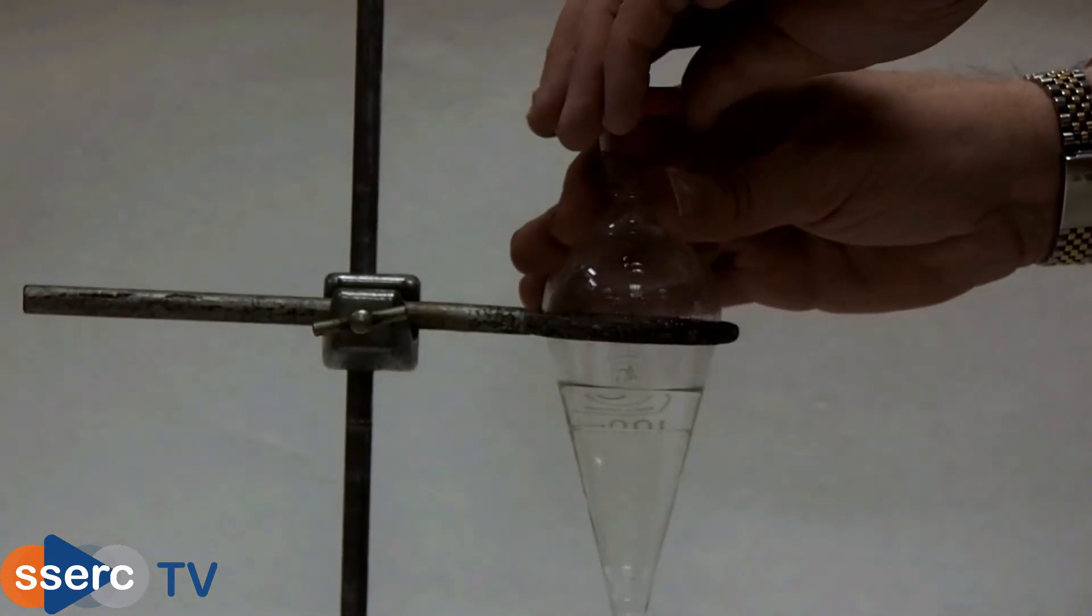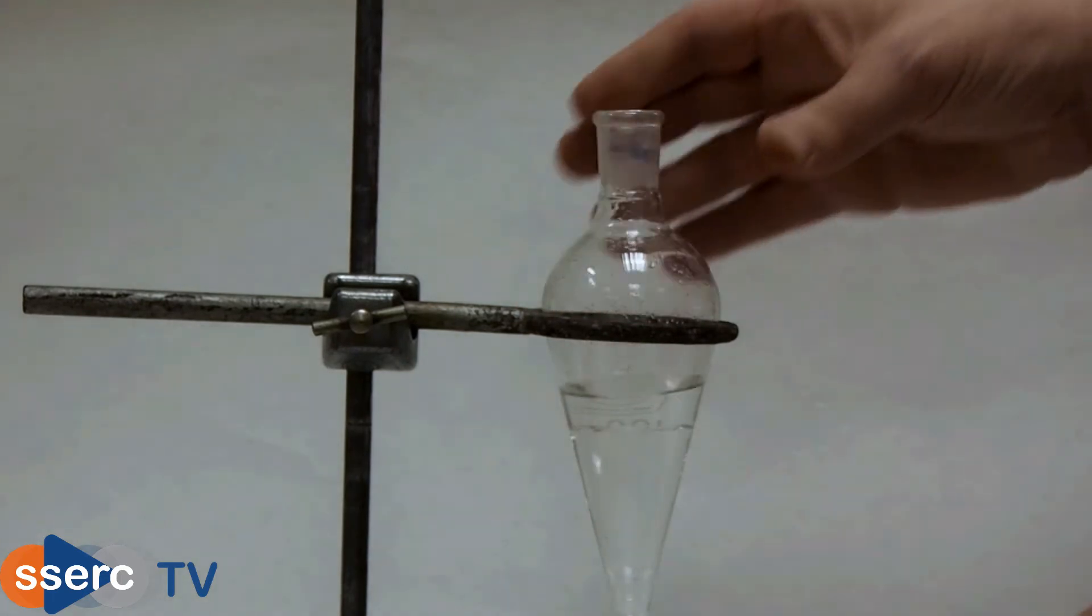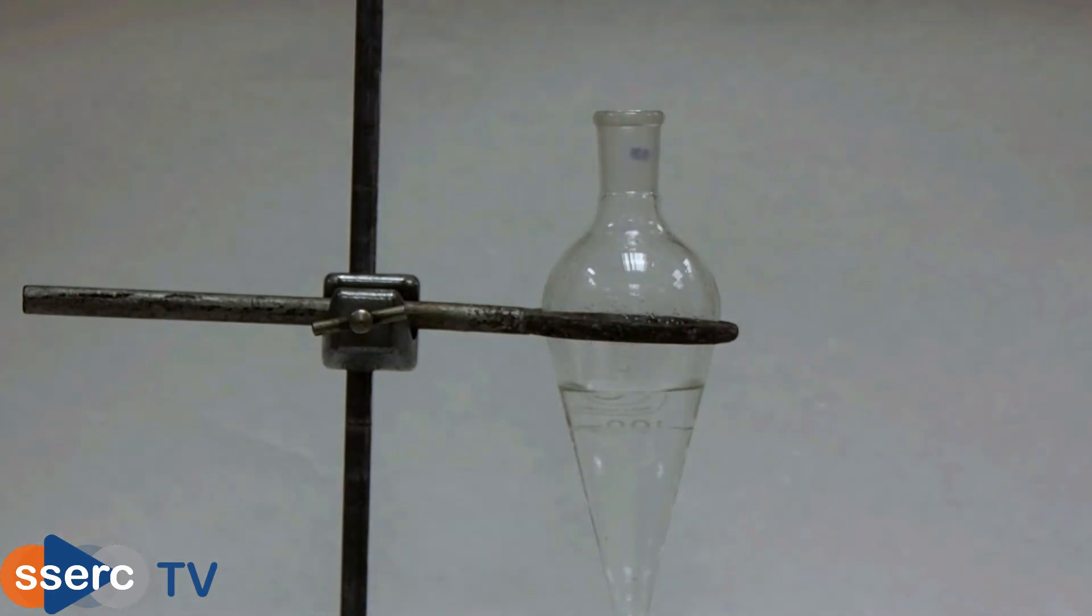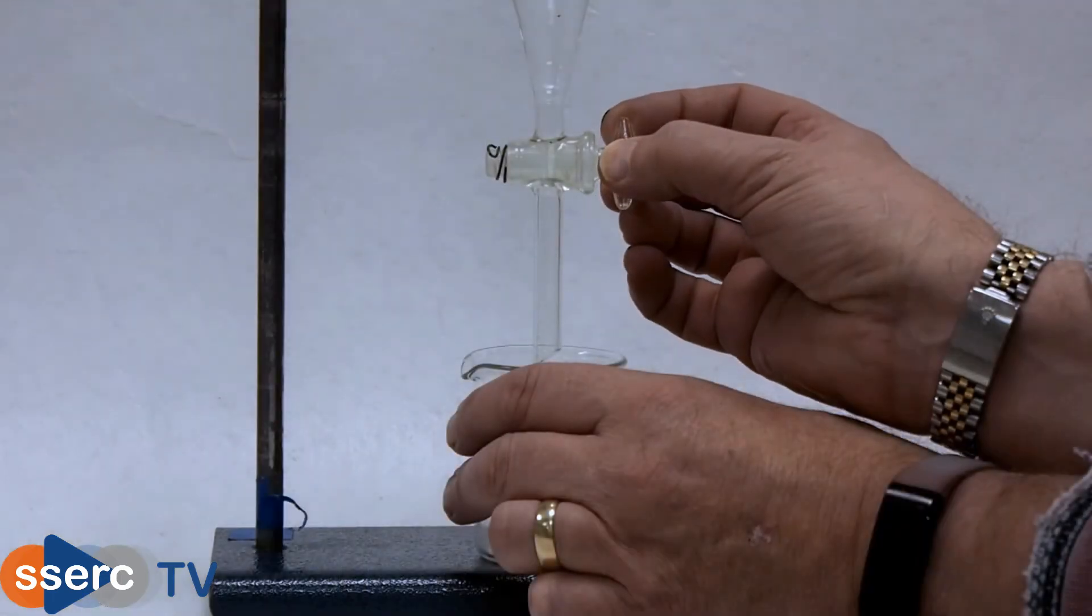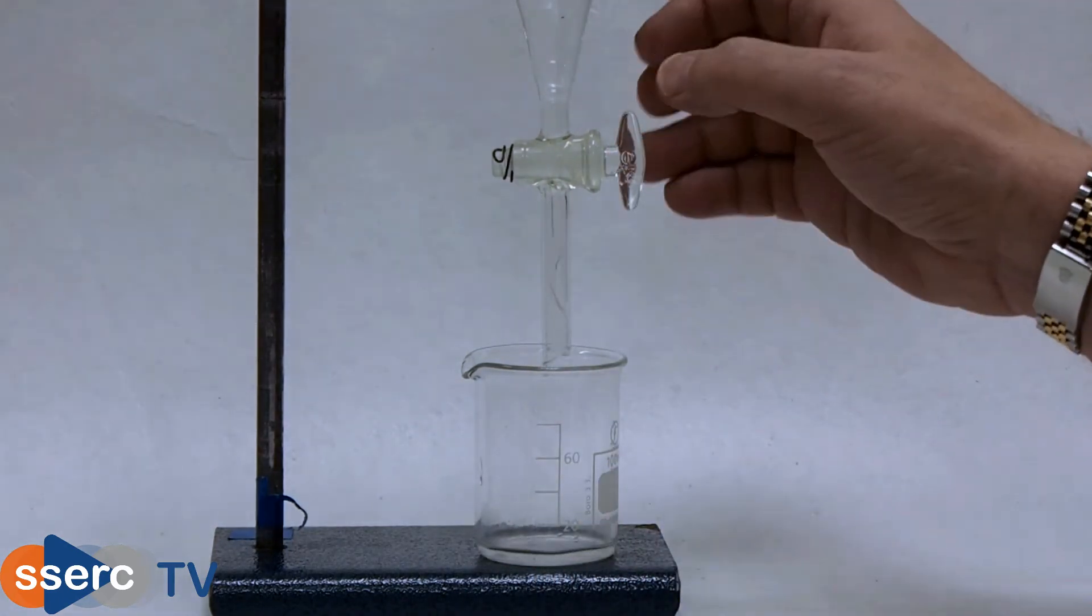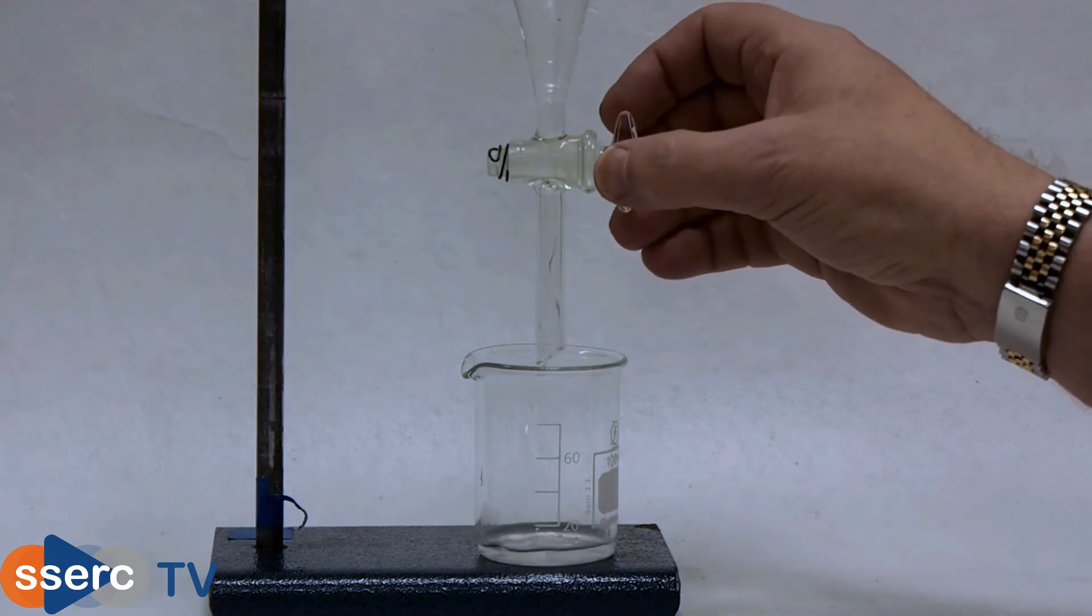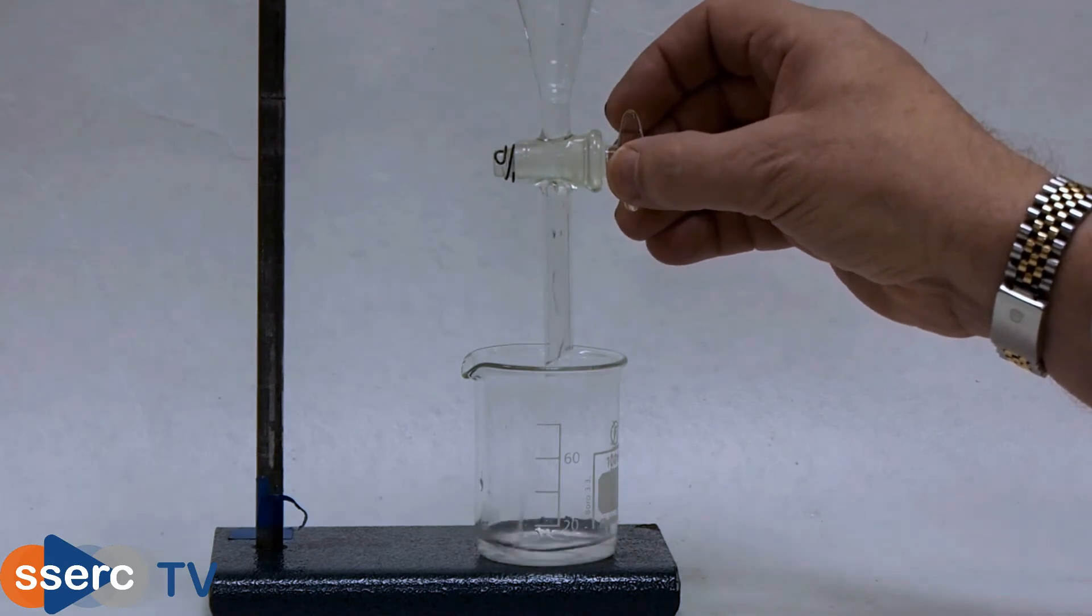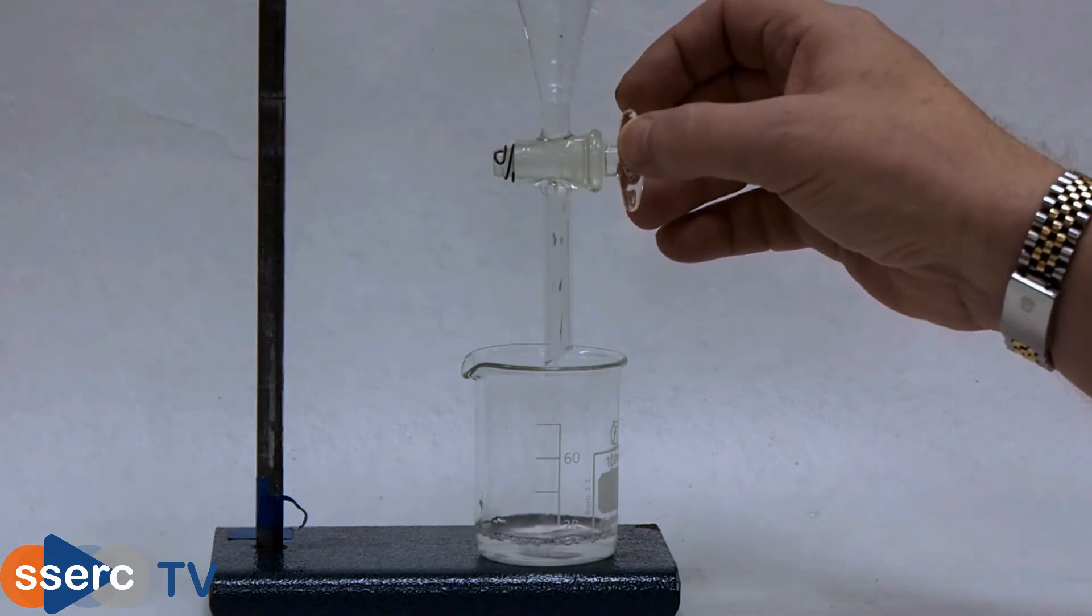Remove the lid or the vacuum will prevent anything coming out and turn the tap to run the bottom layer into a beaker underneath. When the interface between the liquids is near the tap, the narrowing of the funnel means the level drops more rapidly so you need to take care. It is possible though to manage to separate the two layers exactly.